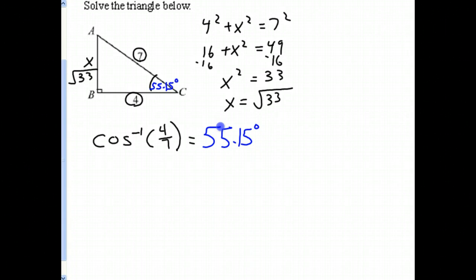And, of course, the easiest way to find out the remaining angle A would simply be to do a subtraction, since we know that angle A and angle C plus 90 is 180. So we know that angle A plus angle B, which is 90, plus 55.15, that's going to give us 180.